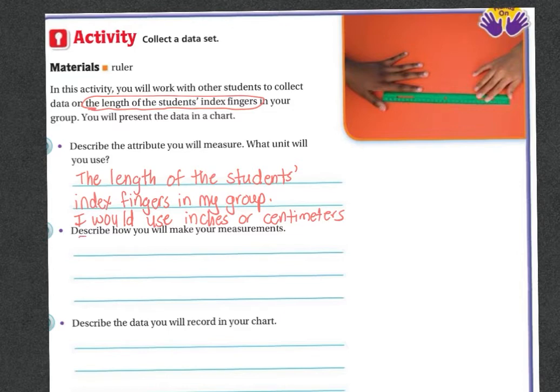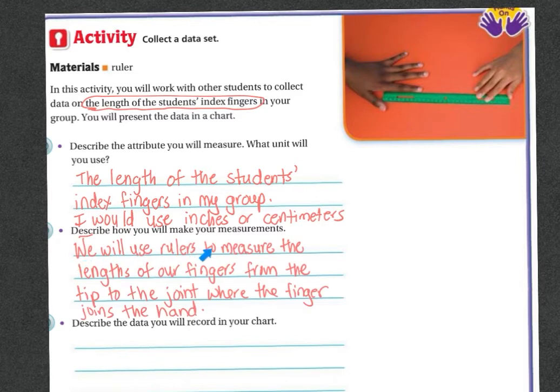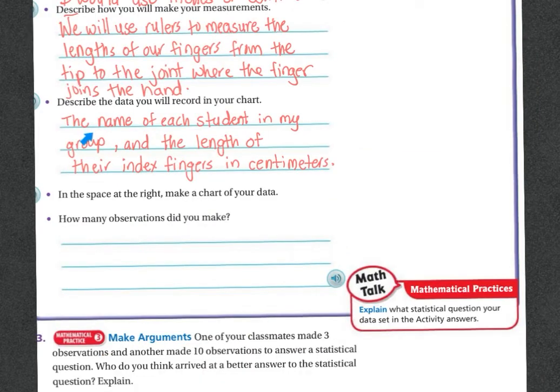Problem two says, describe how you will make your measurements. So in this case, we would use rulers, just like in the picture there. And we would measure from the tip to the joint where our finger is in our hands. So there's the tip to the joint where the finger meets the hand. Next, it says, describe the data you will record in your chart. So I would have the name of each student in my group and the length of their index fingers in centimeters.